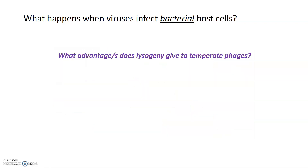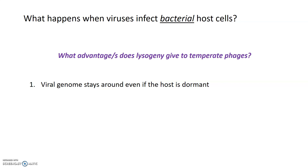There are several advantages to the lysogenic cycle for temperate phages. The first is that the viral genome persists even if the host cell is dormant. Under stressful conditions, bacteria may stop dividing, shut down protein synthesis, and stop replicating their DNA. If the viral genome is integrated into the bacterial genome, the virus can remain dormant with the host until conditions become favorable again, giving the virus a sort of permanent host that continues to divide.